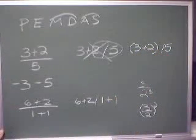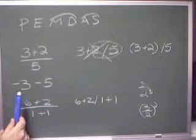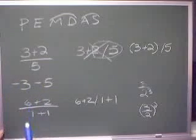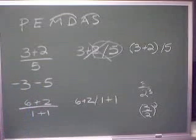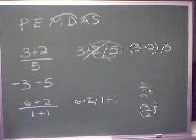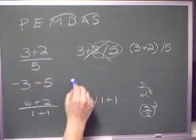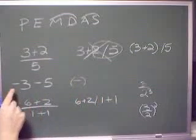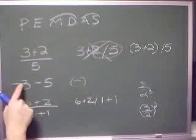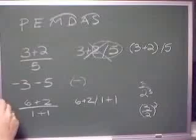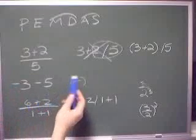Type 3 plus 2 in parentheses divided by 5, then press your enter button and it will give you the correct answer, which is 1. Now another problem when you first begin working with this calculator is the difference between a negative sign and a minus sign. The minus sign is an operation and it's on the right-hand side in blue. The negative sign is to the left of the enter key and it's in parentheses.